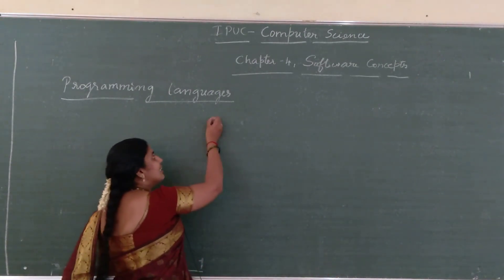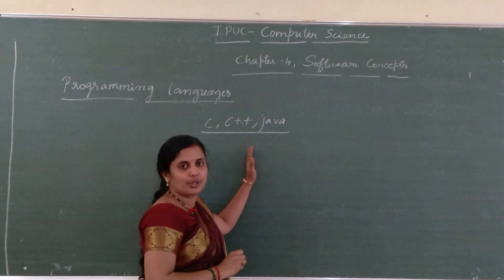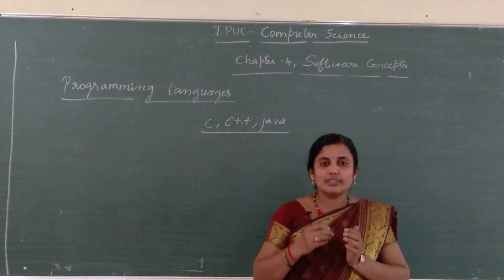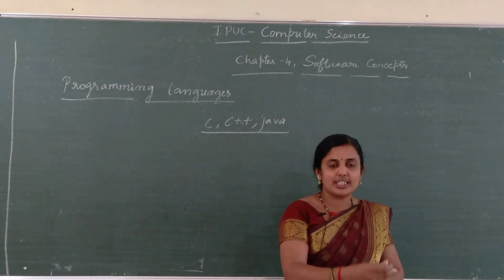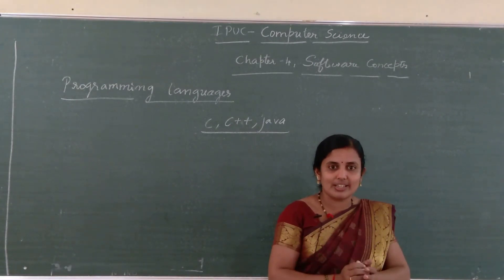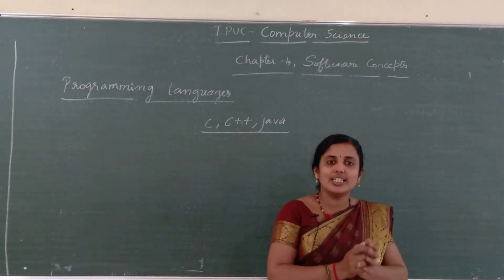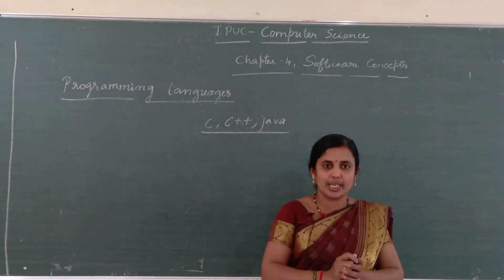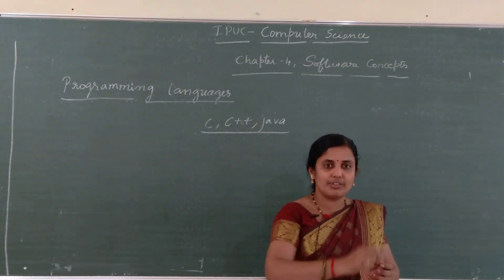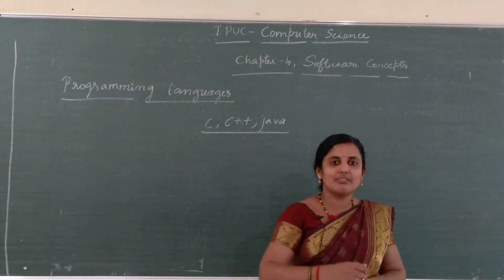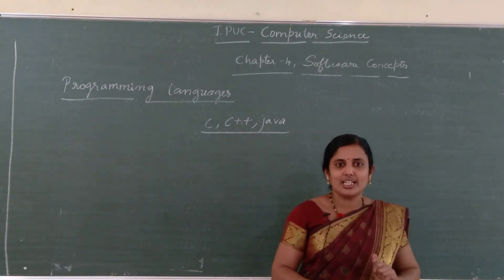Programming languages are C, C++, Java, etc. These are the programming languages we use. When we communicate with each other, we form a meaningful sentence. Similarly, when we communicate with the machine, we use a particular language such as C, C++, etc., and we write programming instructions. That instruction is written in a particular language. So that is known as a programming language — the language we use to write instructions to communicate with the computer.